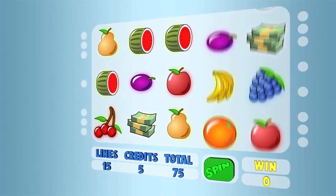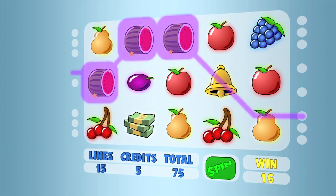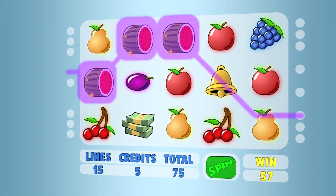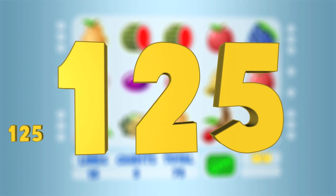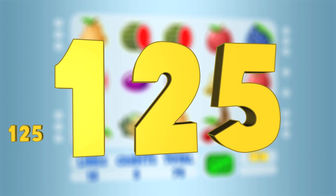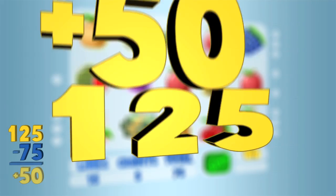When a win occurs, the player is paid back more than they wagered. Here, the player was paid back 125 credits. This is more than the wager of 75 credits. The player has come out ahead by 50 credits.